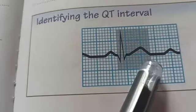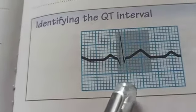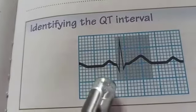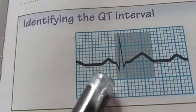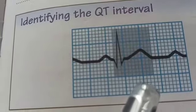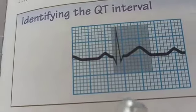The QT interval measures the time needed for ventricular depolarization and repolarization. It extends from the beginning of the QRS complex to the end of the T wave and lasts for about 0.36 to 0.44 seconds.